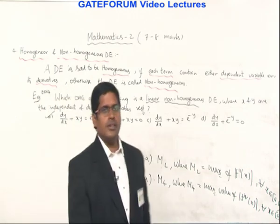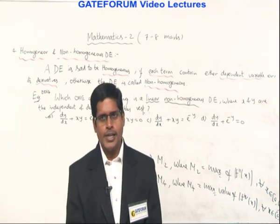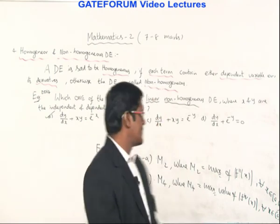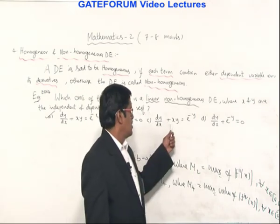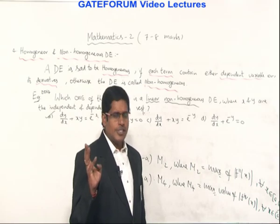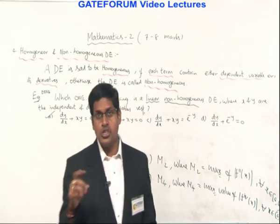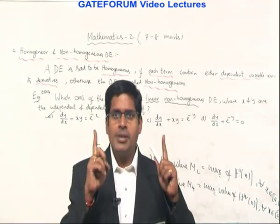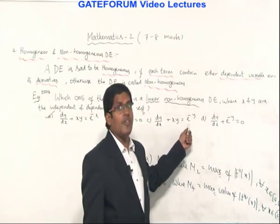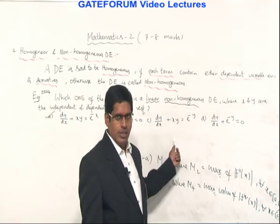The next question from Raju: why is the third option incorrect for a linear non-homogeneous equation? For a linear equation, the dependent variable and its derivatives must occur in the first degree only. Here, the dependent variable term does not have degree 1, so this is a non-linear equation.